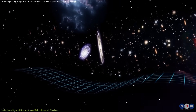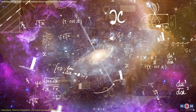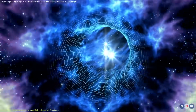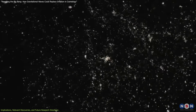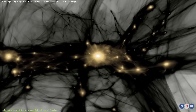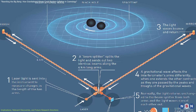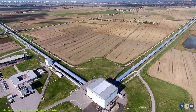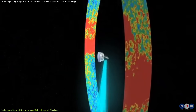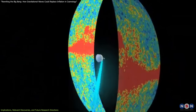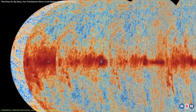The idea that gravitational waves could replace inflation has profound implications for cosmology and physics. One major implication is the potential revision of the cosmic timeline: traditional models place inflation within the first trillionth of a second after the Big Bang, and a gravitational wave-driven mechanism might operate over a different timescale. The detection of gravitational waves by LIGO and VIRGO has demonstrated their existence and properties, providing a foundation for exploring their cosmological role. Observations of the cosmic microwave background by missions like WMAP and Planck also reveal patterns consistent with density variations caused by early gravitational waves.